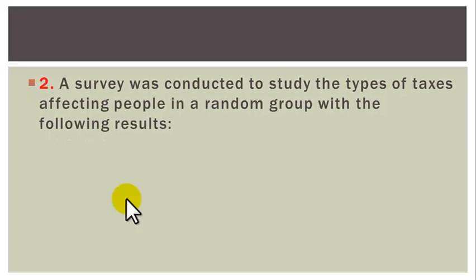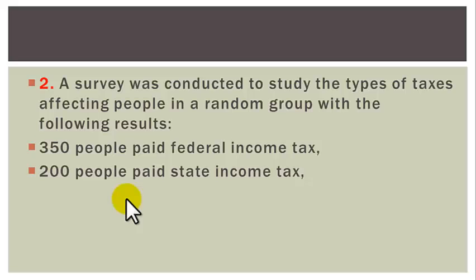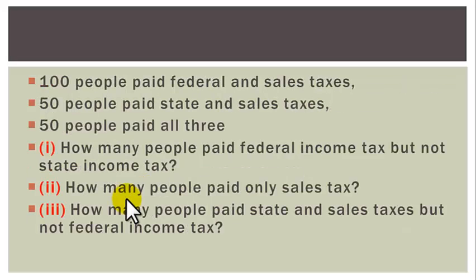Practice Problem 2: A survey studied types of taxes affecting people with the following results: 350 paid federal income tax, 200 paid state income tax, 250 paid sales tax, 75 paid federal and state income taxes, 100 paid federal and sales tax, 50 paid state and sales taxes, 50 paid all three. Find: (1) How many paid federal but not state income tax? (2) How many paid only sales tax? (3) How many paid state and sales tax but not federal income tax?